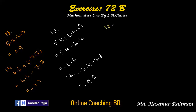Number 17 says 3.1 minus 7.8. If we separate 3.1 from 7.8: 7 minus 3 is 4, giving 4.7. The symbol should be negative because the sign of the bigger number is negative, so we put a negative sign at the result.